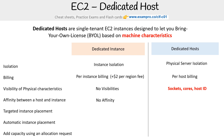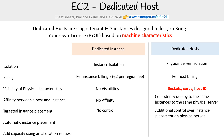For affinity, there's no affinity for a dedicated instance. With a dedicated host, you get consistency with deploys going to the same physical server. There's no control over targeting instance placement for a dedicated instance, but you do have that control on a dedicated host. Automatic instance placement is available for both. And to add capacity using allocation requests, it's no for dedicated instances and yes for dedicated hosts.